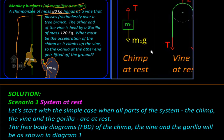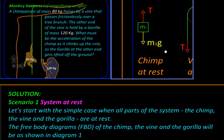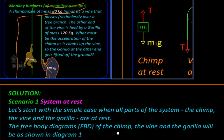Let us start with the free body diagram of the chimp. Here the tension in the vine is completely balancing the chimp's weight, so the tension and the chimp's weight will be equal.